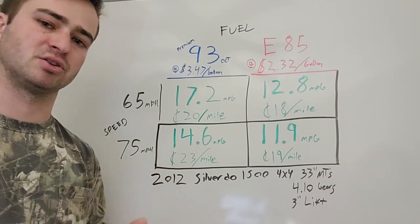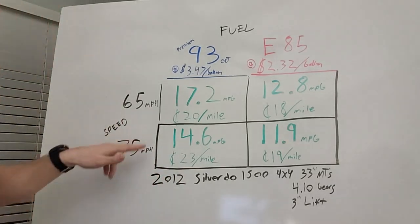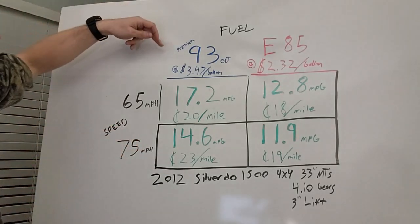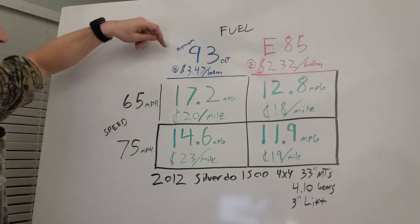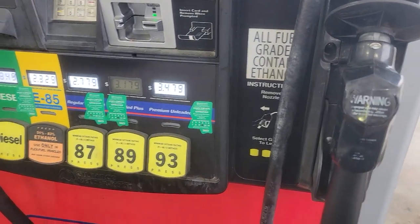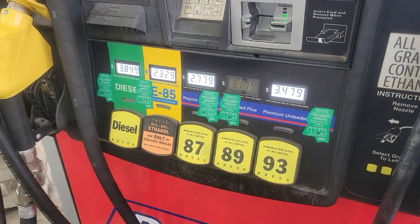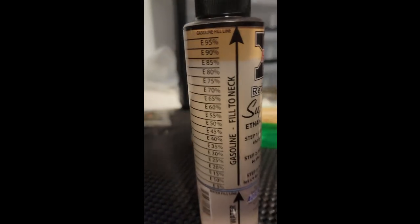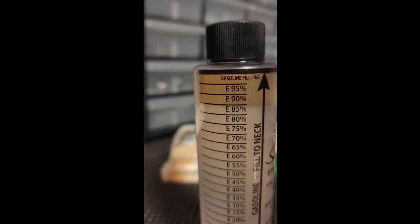So I have actually calculated here that the 93 octane was $3.47 a gallon and the E85 that I got was $2.32 per gallon. So I calculated out, you can check my math if you want to.